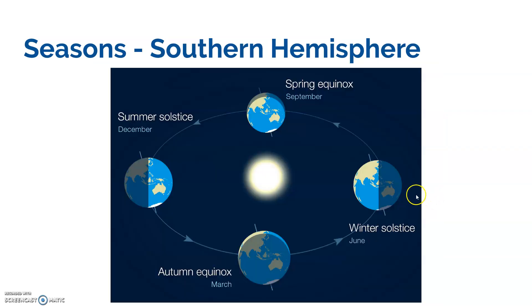We see the exact opposite thing happen in the southern hemisphere. In their summer, it's actually December. It's really weird for us to think about — we could be experiencing snow and they're saying it's so hot outside. When it's Christmas there, they don't have a white Christmas. They have a hot, sweaty Christmas, because that's when they have summer, and they have winter in June.